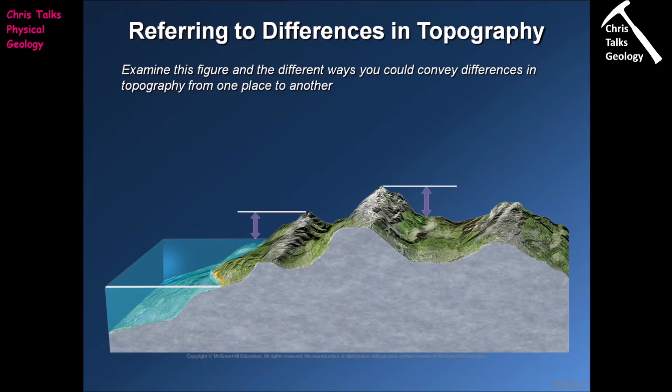To begin with, we're going to think about some of the terms we use when referring to differences in topography. If we look at the diagram on the bottom of the slide, we can see there are a couple of rather simple ways in which we can talk about topography: we can talk about it with reference to its height, and we can talk about it with reference to its slope.